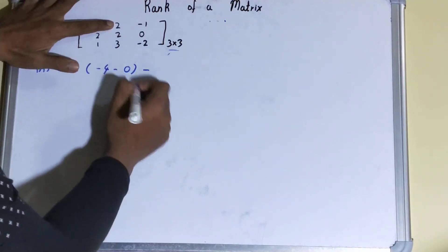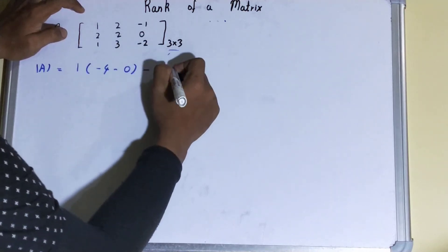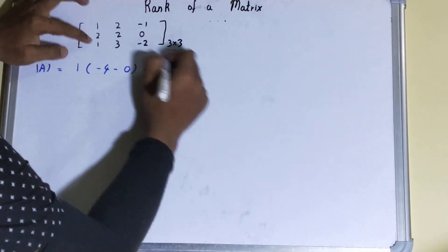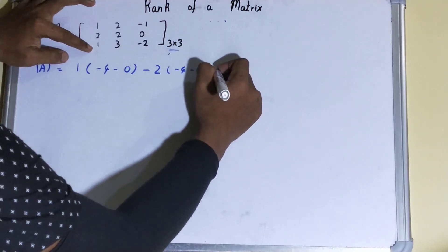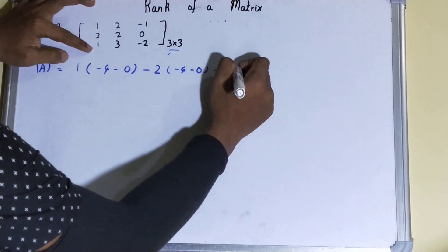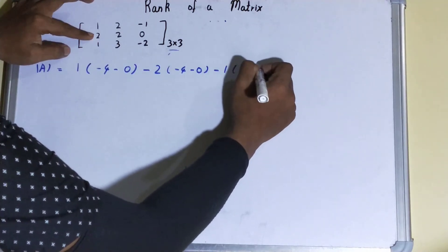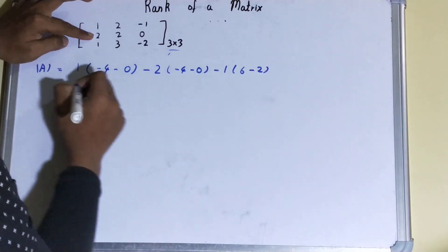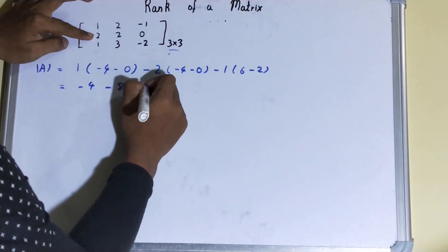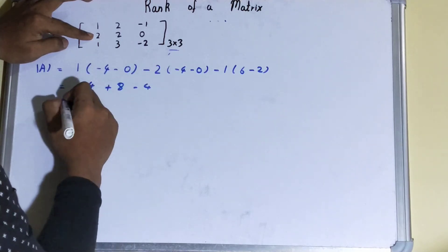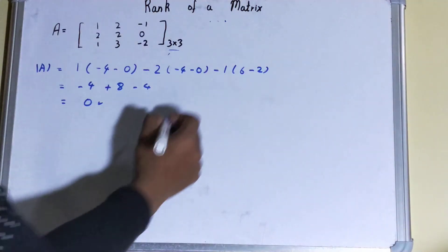We take the first element and cross-multiply: that gives minus 4 and 0. The second element is 2, so we subtract 2 times the cross-multiplication of those entries. Then the last element is minus 1, cross-multiplied to give 2×3 minus 2, which is 6 minus 2. Solving further, we get minus 4 minus 8 plus 8 — because of the double negative — giving a determinant of zero.